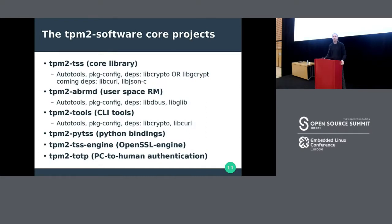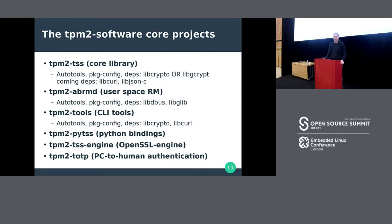We try to keep the core projects as low-profile as possible in terms of dependencies. There have been rumors that it's complicated and requires many dependencies to build the TSS, but that's not true. Currently we're built with only one dependency — libcrypto or libgcrypt for cryptographic operations. With the next release, we'll also link against libcurl and libjson-c, but that's three dependencies and nothing more. The user-space resource manager uses libdbus and glib for inter-process communication, and the tools add OpenSSL and libcurl — just two more dependencies.